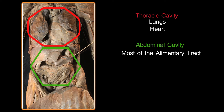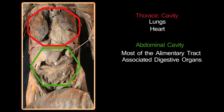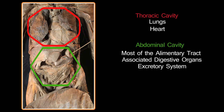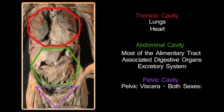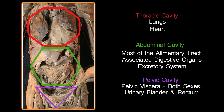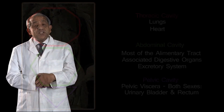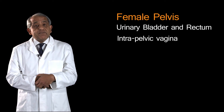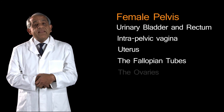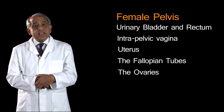The abdominal cavity contains most of the alimentary tract, the associated digestive organs, and the excretory system. The pelvic cavity is packed with the pelvic viscera. In both sexes these are the urinary bladder and the rectum. Additionally, in the female you have the intrapelvic vagina, the uterus, the fallopian tubes, and the ovaries, all located within the pelvic cavity.